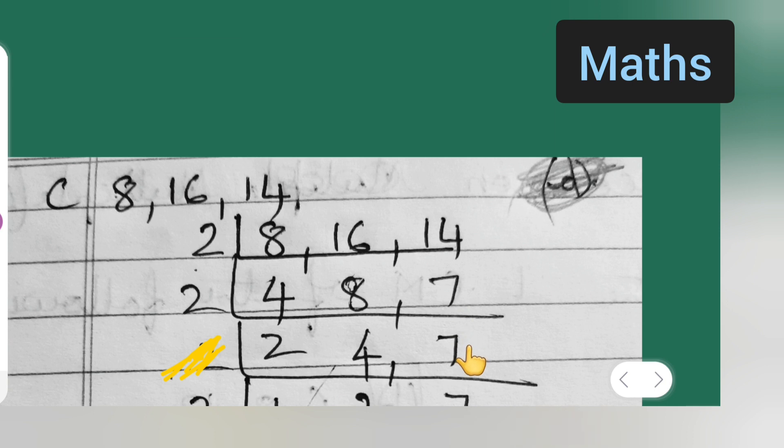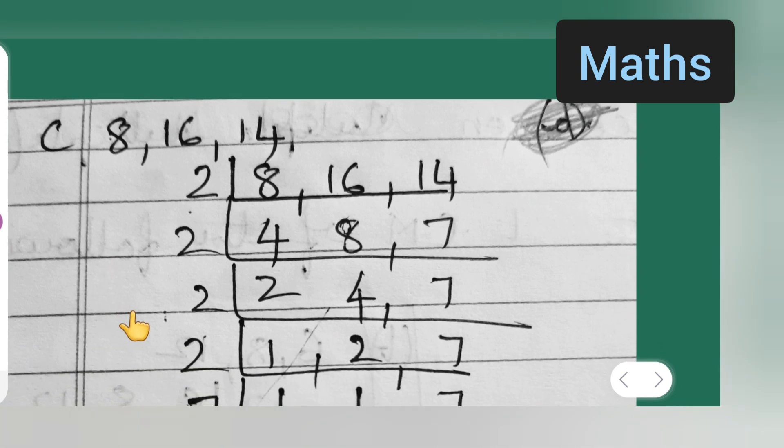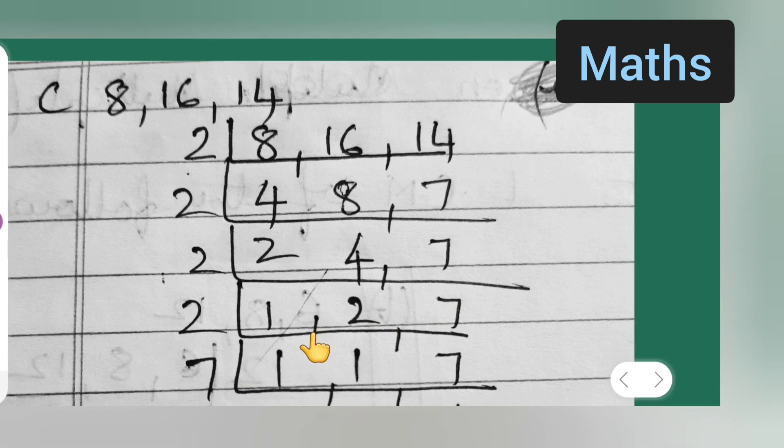Now what we have to do over here is we are getting this 2 and 4 in the table of 2. So moving towards the next step: 2 ones are 2, 2 twos are 4, 7 keep it as it is. Again we are getting 2 in the table of 2 only, so it will be 2 ones are 2, 1 keep it as it is. Then 2 ones are 2, 7 we are not getting in the table of 2, we have to keep 7 as it is.